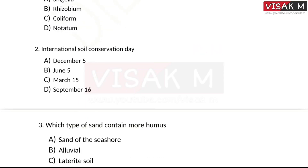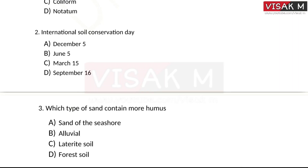The next question — this is an important question: when is International Soil Conservation Day? Options: A) December 5, B) June 5, C) March 15, D) September 16. The right answer is option A, December 5.